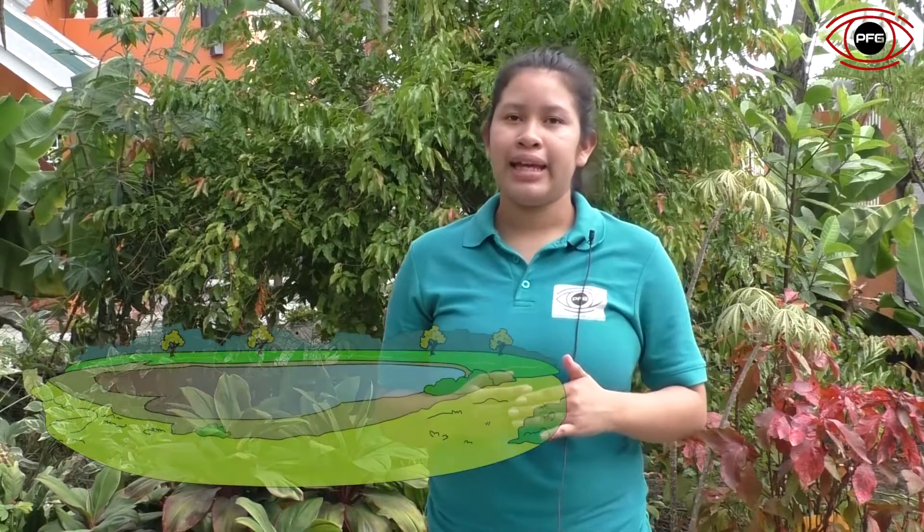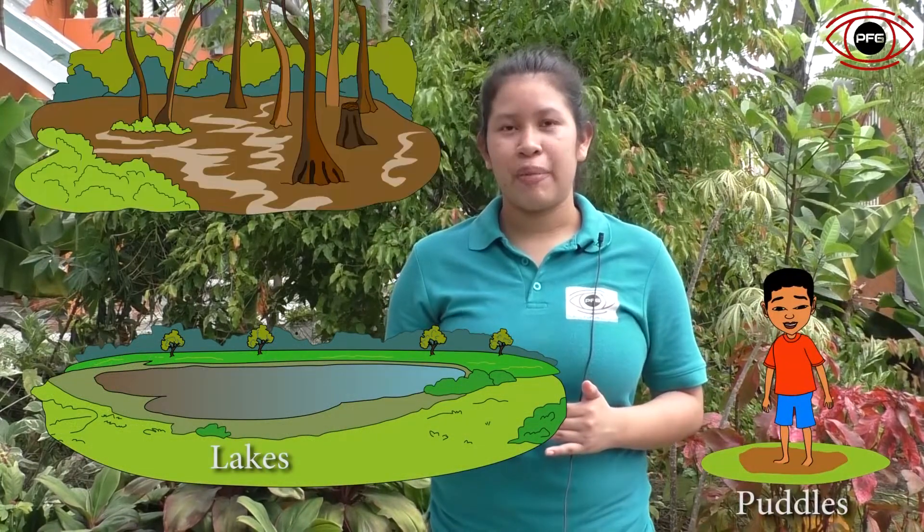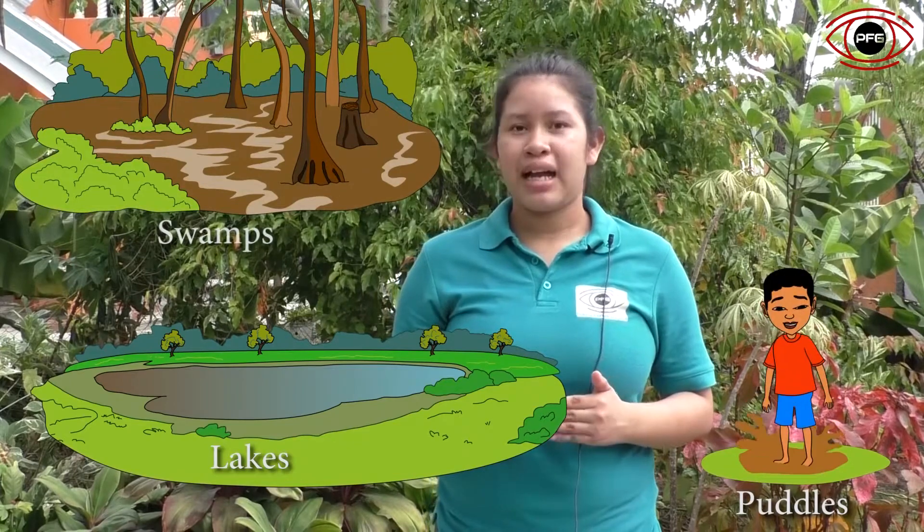Can you list some sources of stagnant water? Some sources of stagnant water are lakes, puddles of water left from a rainstorm, marshes, and swamps. Flowing water, like the name implies, is water that is constantly moving.